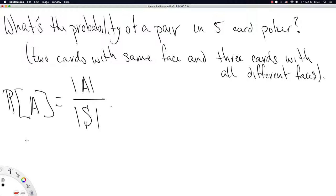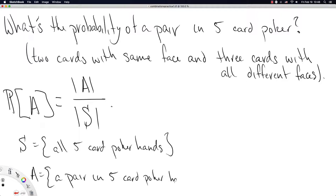In this example, the sample space S is all five-card poker hands. And A is the more interesting set: hands with a pair in five-card poker.